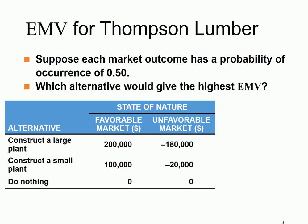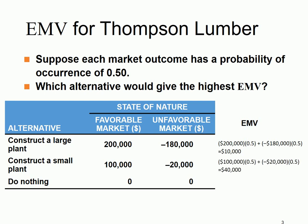The highest EMV means the highest profit, and therefore it's the most favorable option. For each alternative, we calculate the corresponding EMV, which is the payoff times probability, summed up. So it's $200,000 times 0.5 plus minus $180,000 times 0.5, which gives $10,000. The second alternative gives an EMV of $40,000, and the third option gives an EMV of zero. So the option with the highest EMV is to build a small plant, and therefore the company should build a small plant.